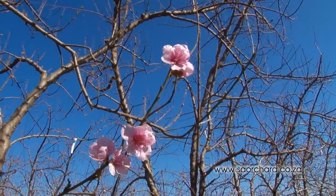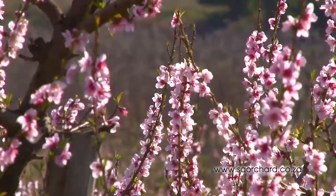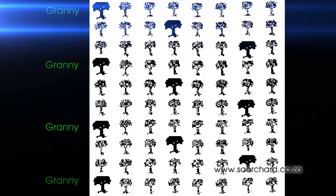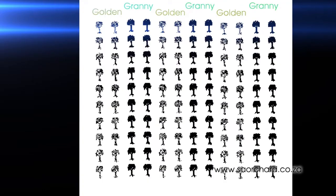Cross-pollinator varieties of trees are planted in the orchard. If you are planting a golden delicious orchard, every third tree in every third row should be a granny smith or another compatible variety. Many farmers plant two rows of one variety and then two rows of another variety to be sure that cross-pollination will occur efficiently.